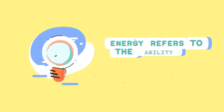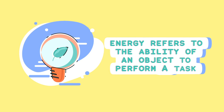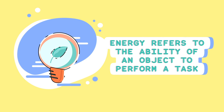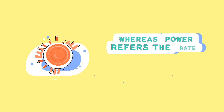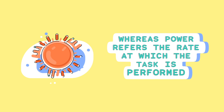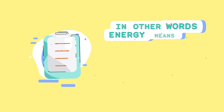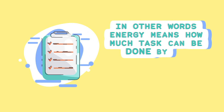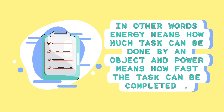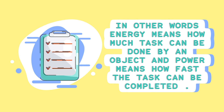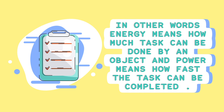Energy refers to the ability of an object to perform a task, whereas power refers to the rate at which the task is performed. In other words, energy means how much task can be done by an object, and power means how fast the task can be completed.